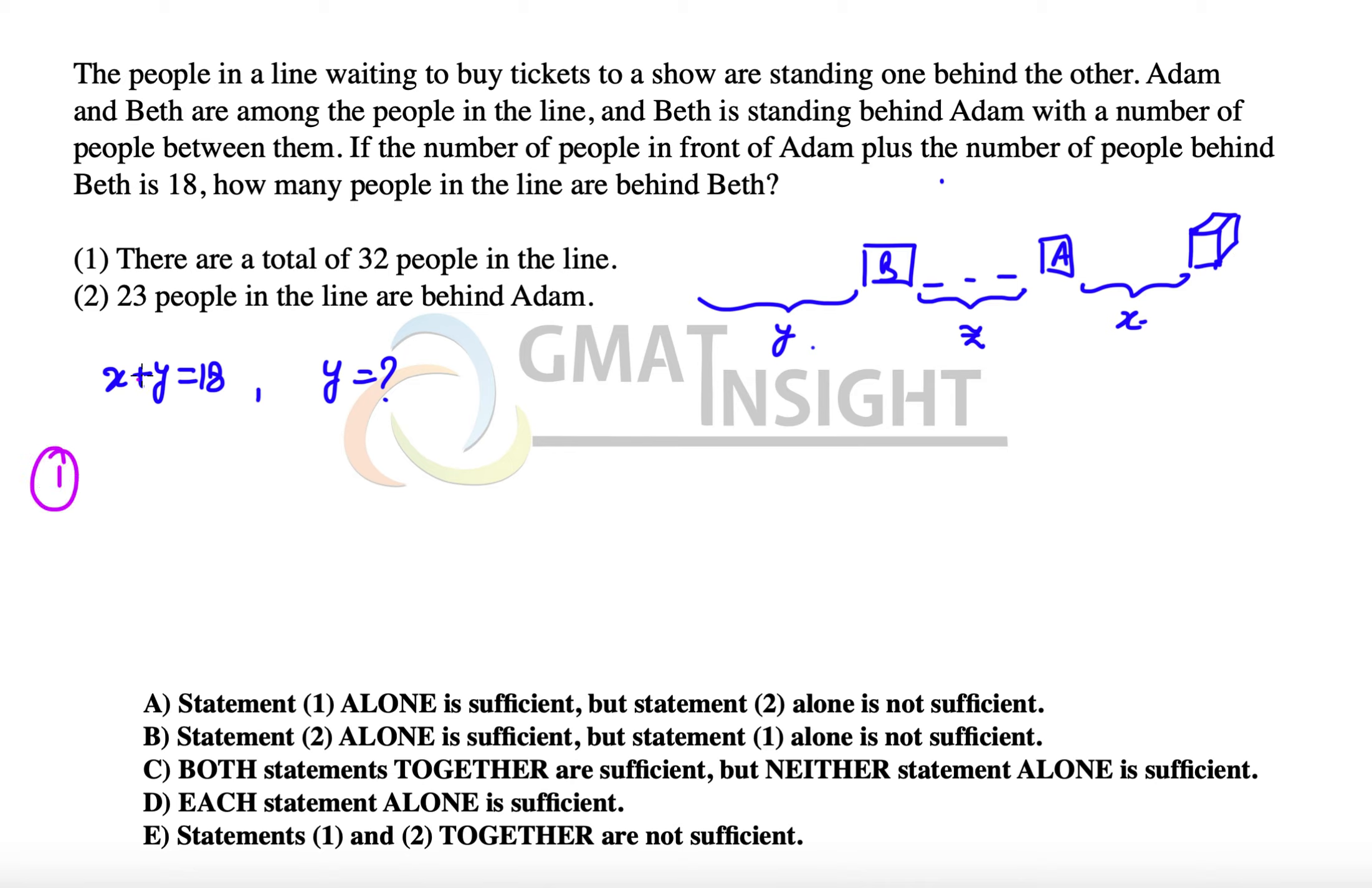The first statement says that there are a total of 32 people in the line. So we know that x plus y plus z plus 2, this 2 is for A and B, is equal to 32, which means x plus y plus z is equal to 30.